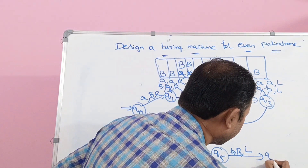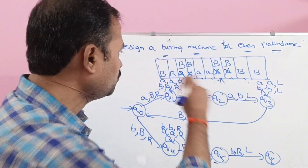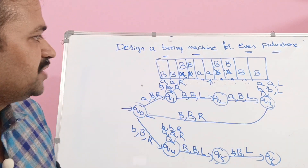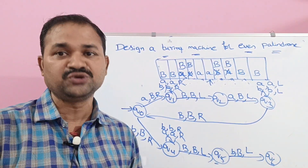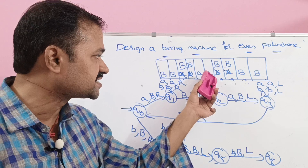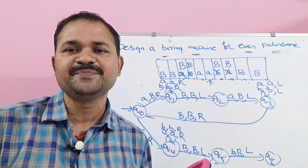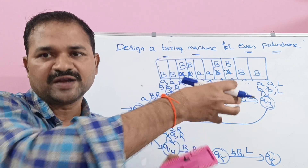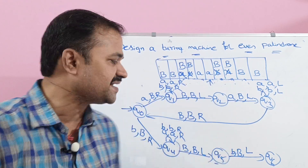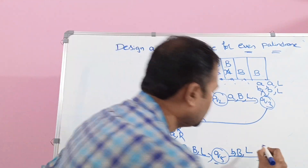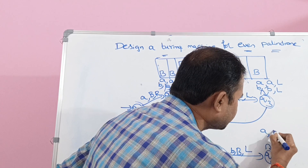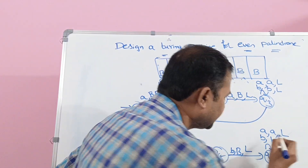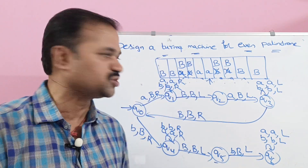Now we are at Q6 state. On Q6, if we apply any number of A's and B's, keep them the same but move the head one position to the left until we get the blank symbol. If we read A, keep it the same and move the head one position to the left. If we read B, keep it the same and move the head one position to the left.